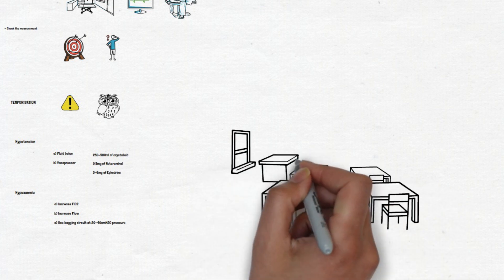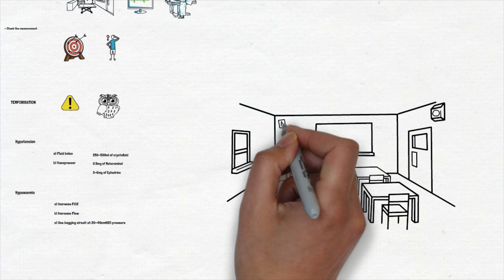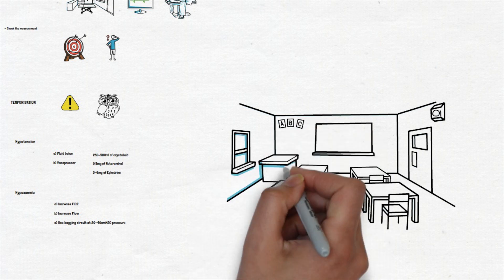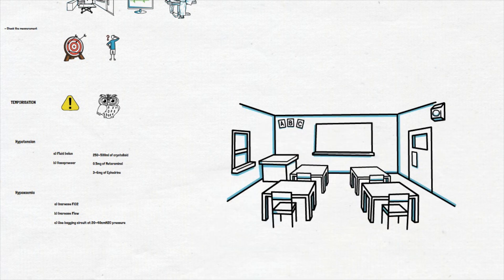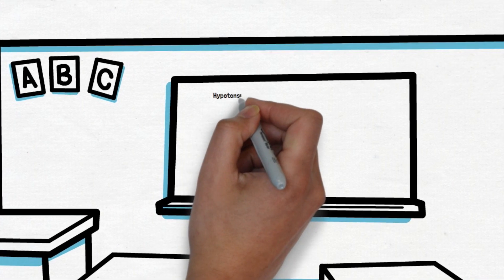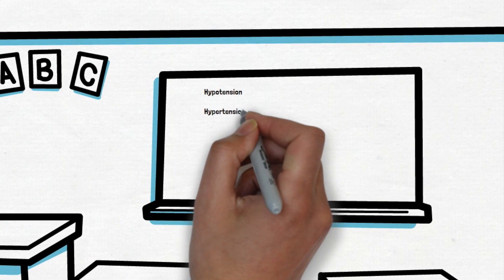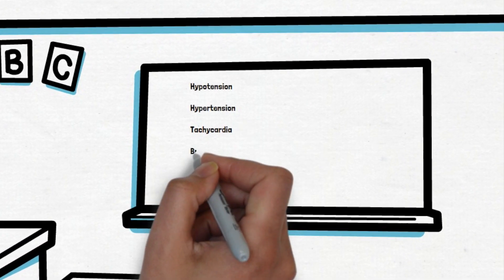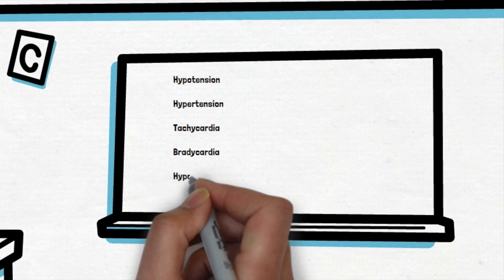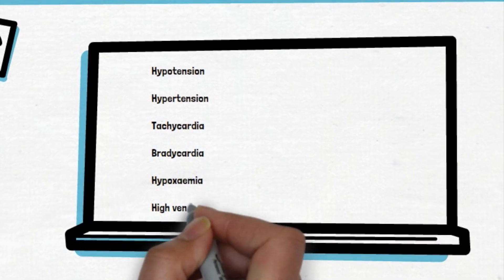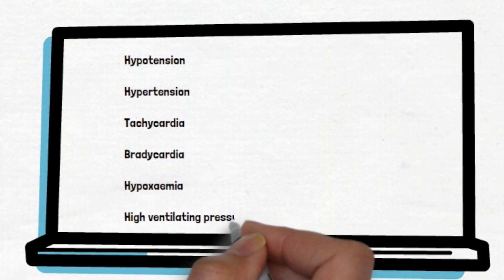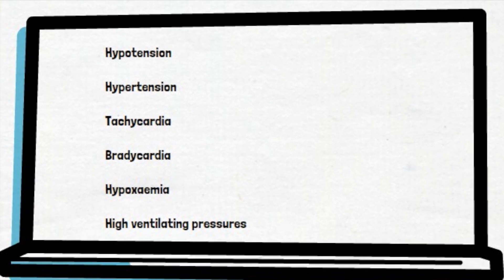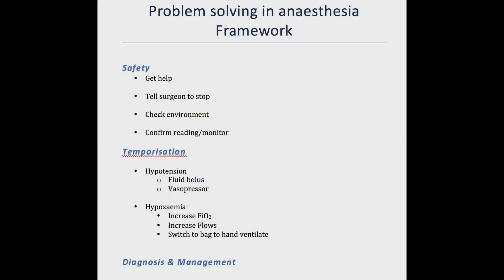The common problems that are best to start with are hypotension, hypertension, tachycardia, bradycardia, hypoxemia, and high ventilating pressures. We will go through each of these in more detail in the next few presentations. I hope you enjoyed this video. Please post any questions or comments below and see you next time.